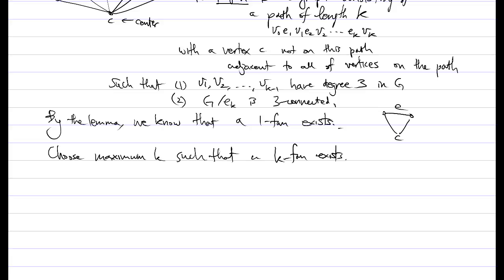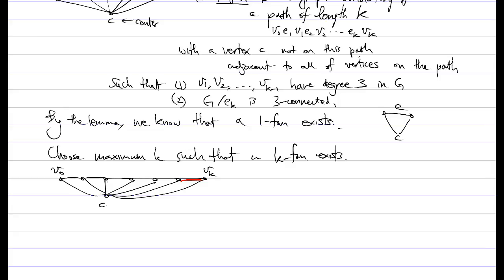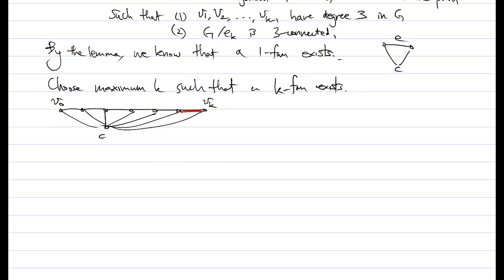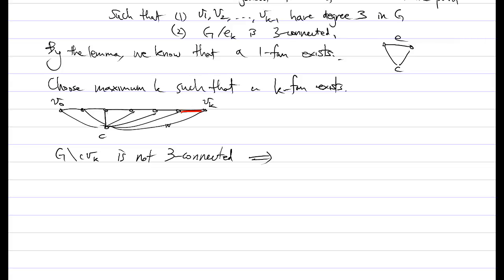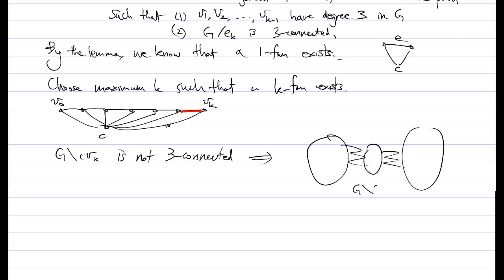Now what can happen? I have V0 up to VK, and the center C is adjacent to all of these. I know that the last edge can be contracted to make a 3-connected graph. Now let's try to delete the edge CVK. If I delete this edge, the graph is not going to be 3-connected, so there must be a vertex cut of size 2 which separates the graph into two parts in G-delete-CVK.